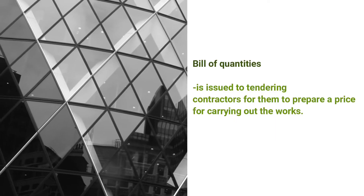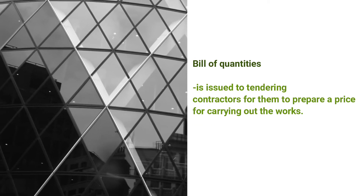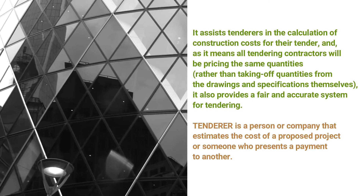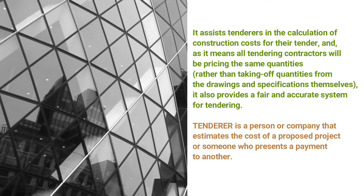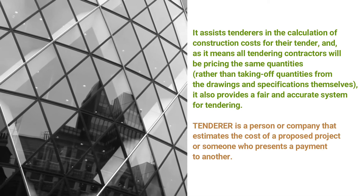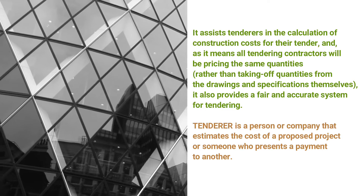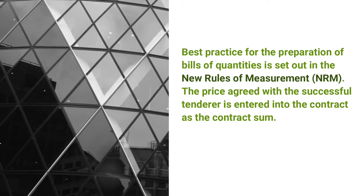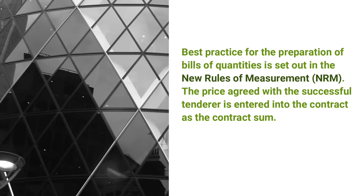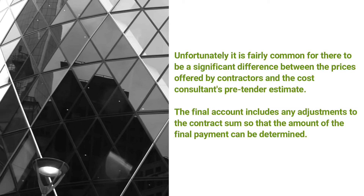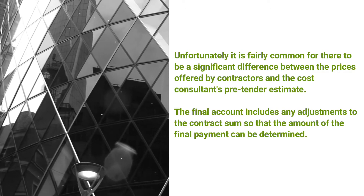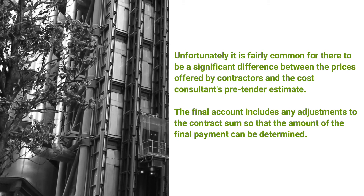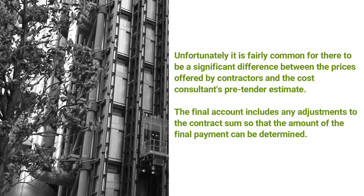A bill of quantities is issued to tendering contractors for them to prepare a price for carrying out the works. The bill of quantities assists tenderers in the calculation of construction costs for their tender, and as it means all tendering contractors will be pricing the same quantities rather than taking off quantities from the drawings and specification themselves, it also provides a fair and accurate system for tendering. Best practice for the preparation of bills of quantities is set out in the New Rules of Measurement. The price agreed with a successful tenderer is entered into the contract as the contract sum. Unfortunately, it is fairly common for there to be a significant difference between the prices offered by contractors and the cost consultant's pre-tender estimate. The final account includes any adjustments to the contract sum so that the amount of the final payment can be determined.